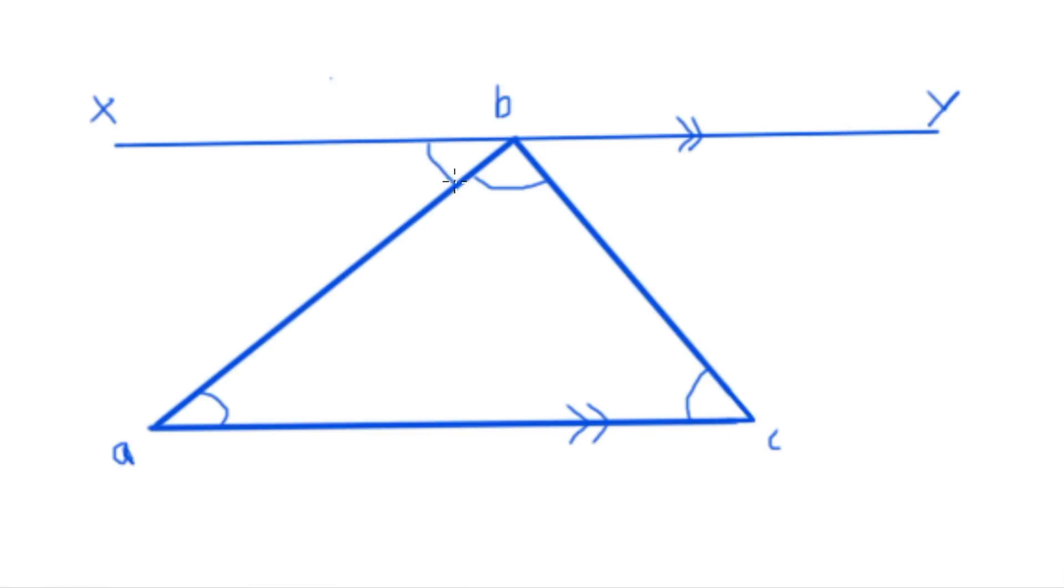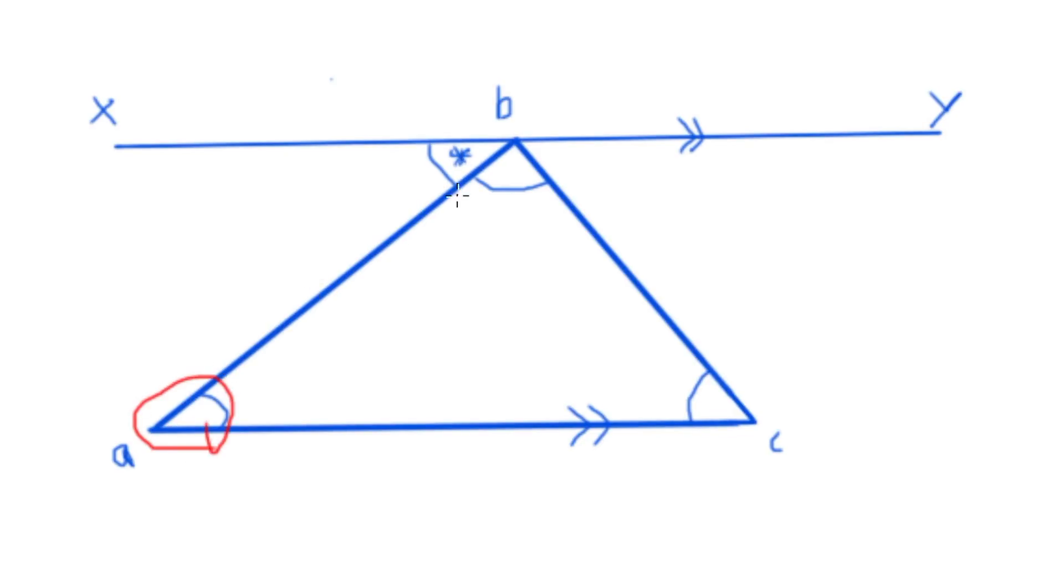Firstly, we should notice that the angle we'll mark with the asterisks should be identical to angle A as their corresponding angles. We should also notice that the angle opposite our asterisk angle on the straight line will also be equal to angle C for the same reason.